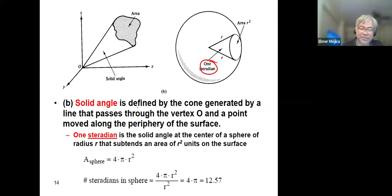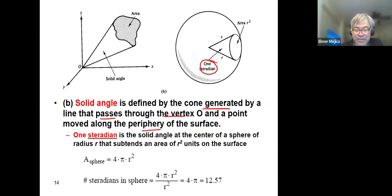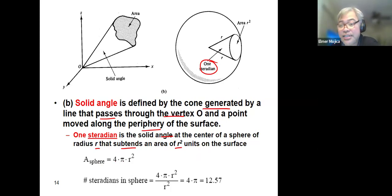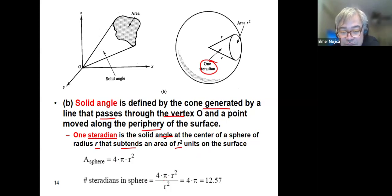A solid angle is defined by the cone generated by a line that passes through vertex O and a point moving along the periphery of the surface. One steradian is the solid angle at the center of a sphere of radius R that subtends an area of R² units on the surface. The area of the sphere is 4πR², so the number of steradians in the sphere is 4π, or approximately 12.57.